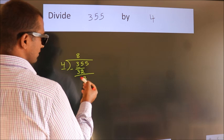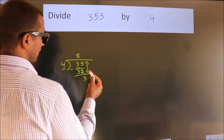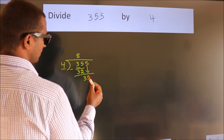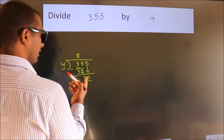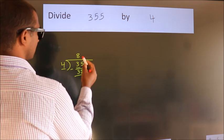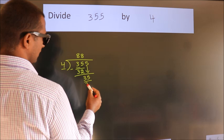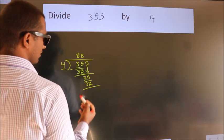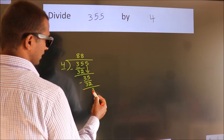After this, bring down the next number. So 5 down. So 35. A number close to 35 in the 4 table is 4 times 8 equals 32. Now we subtract. We get 3.